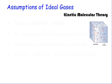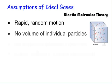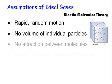We're going to start off with Assumptions of the Ideal Gases. This is called the Kinetic Molecular Theory and you see that word kinetic. What does that word kinetic mean? It means that gases are moving in rapid random motion. Gases are just moving in rapid random motion. They literally have no volume of their individual particles. Their molar masses are so small that there's really almost no volume.